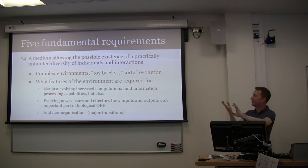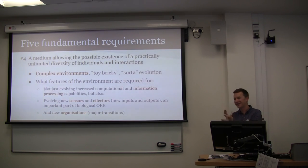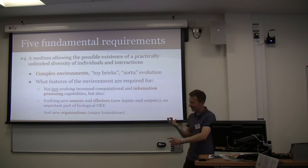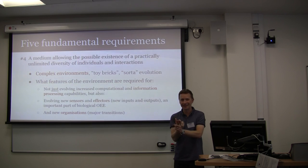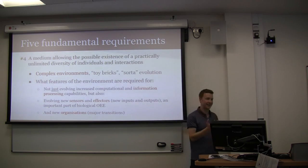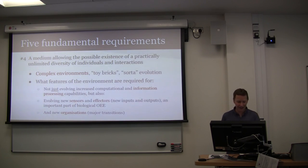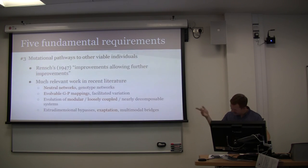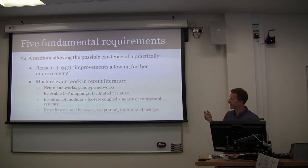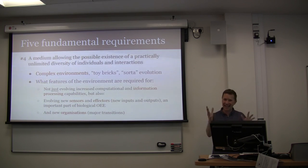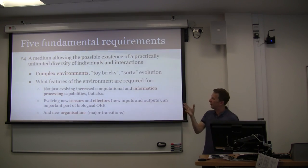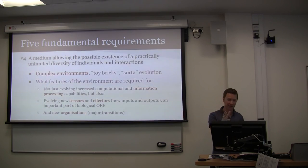So we've got robust reproducing individuals, some of which can possibly create more complex offspring, and there are mutational pathways so that they can actually move through mutational space from one viable individual to another.